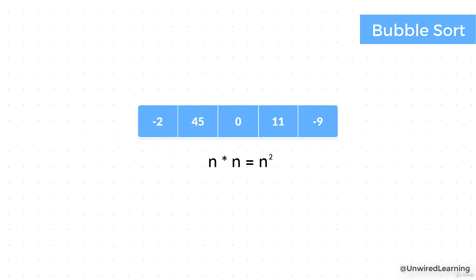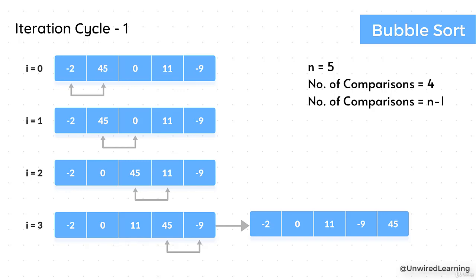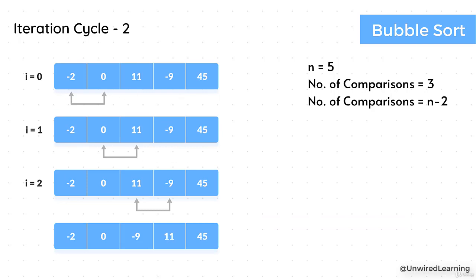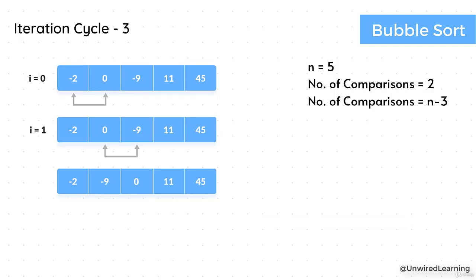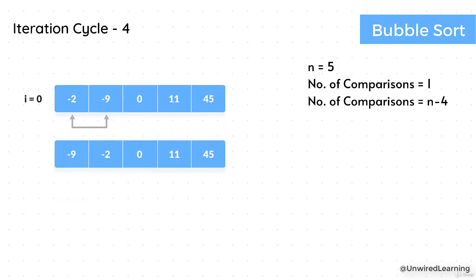Now, with this type of answer, there are chances that you are not convinced, so let's talk about the mathematical way by which we can find out the complexity. Let me talk about the first iteration cycle: when we have n elements, the number of comparisons were 4. In terms of n, it was n minus 1. With our iteration cycle second, we had three comparisons, which is n minus 2. With our third iteration cycle, we have n minus 3, and with our fourth iteration cycle, we have n minus 4.